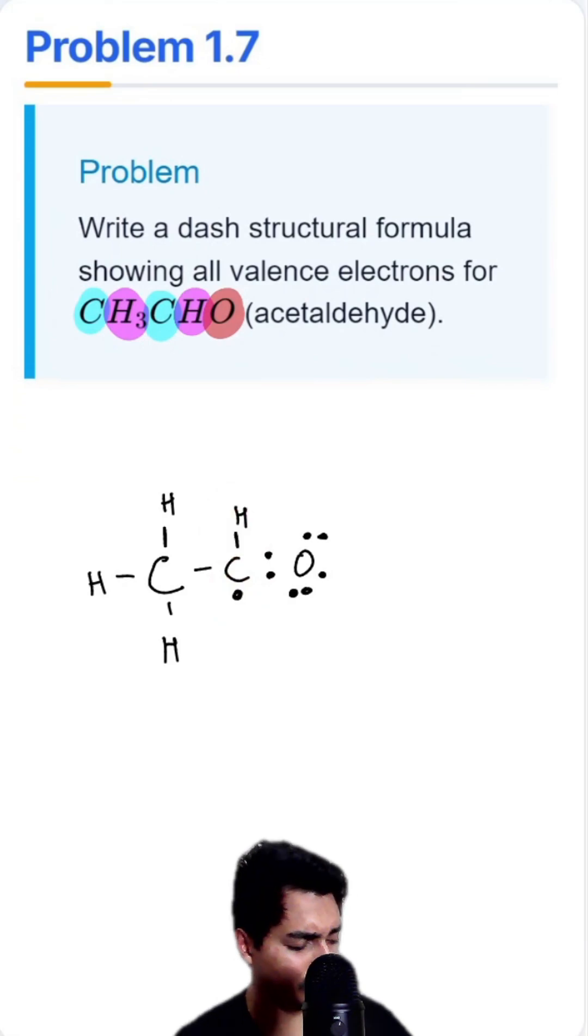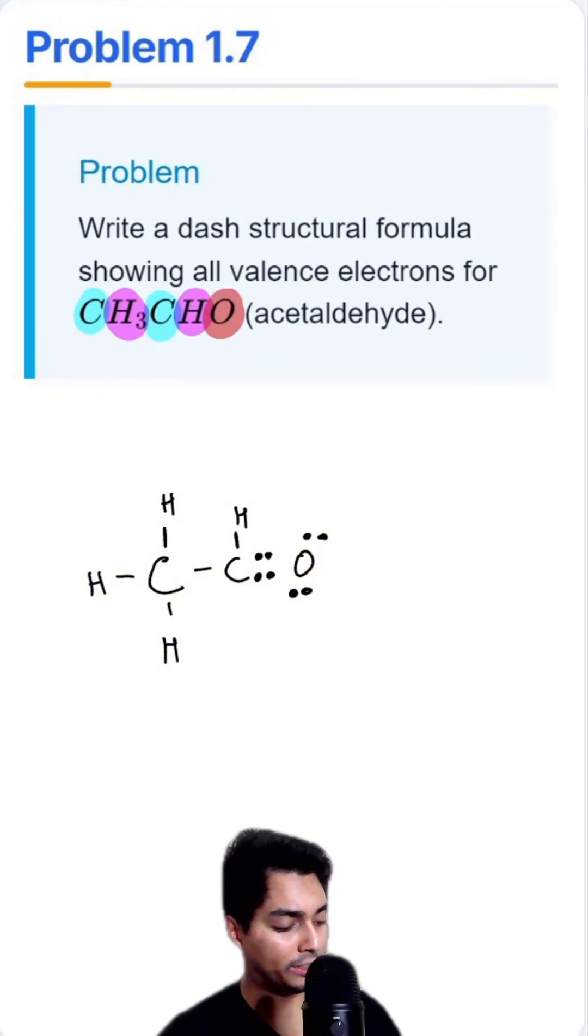So what I'm going to do is I'm going to take my lone pair and then bond this one to this one here. So essentially I'm going to move this electron and put it right here, and then I'm going to move this electron and put it right here. So now we have two pairs of electrons that creates a double bond represented by these two lines here.